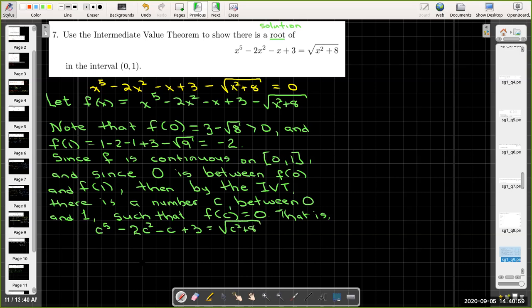Oh, I shouldn't have said equals yet. Got ahead of myself. I got ahead of myself. Should have just said minus radical c squared plus 8 equals 0.